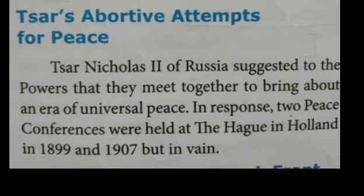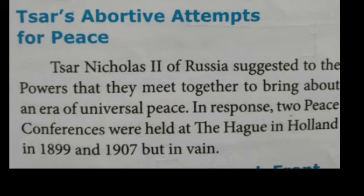Tsar's abortive attempts for peace: abortive means failure. Tsar Nicholas II of Russia advised countries to meet together and bring about an era of universal peace. Peace conferences were held at The Hague — a city in Holland, also known as the Netherlands — in 1899 and 1907. But it was in vain; the peace conferences were a failure.